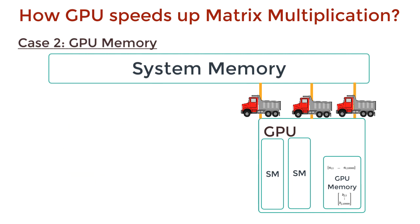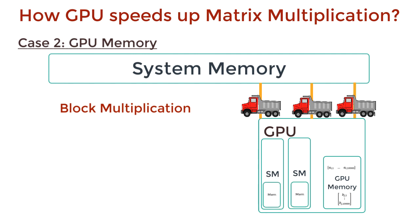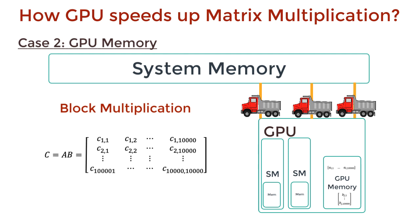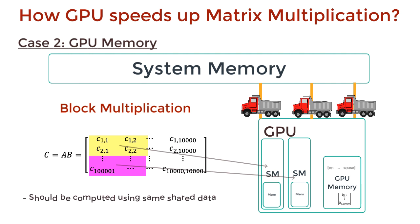But we can do this even faster using block multiplication. Instead of using the GPU memory, we can make use of the shared memory within a streamlined multiprocessor. This means that each SM would compute a block of the final matrix. But we can only allocate a block to an SM if every element in this submatrix block can be computed using the same shared data, and it should be small enough to fit in the SM memory. This is possible with block multiplication.